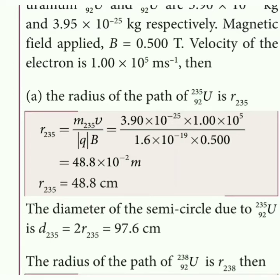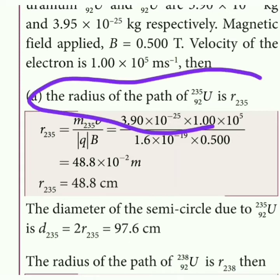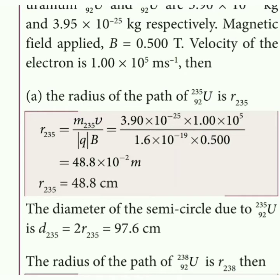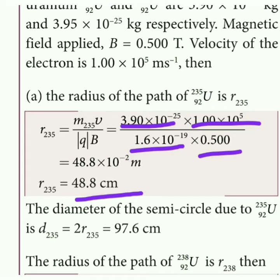The radius of the path for Uranium-235 is calculated using r equals mv divided by qB. For Uranium-235, with magnetic field 0.5 tesla, substituting and simplifying gives a radius of 48.8 cm. The diameter D equals 2R gives 97.6 cm. Uranium-235 travels this semicircular path diameter.